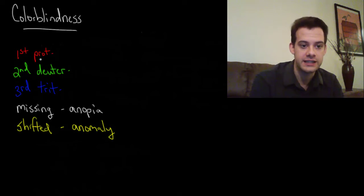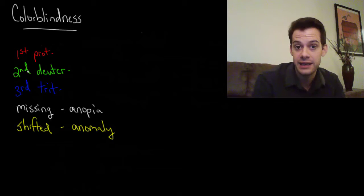The first in this case is red, so this is going to use the Greek for first, pro. So we have red, then we have the green, the medium cone. This uses the Greek for second, deuter. And then for the third we have tri in Greek and this is for the blue cone type or the short wavelengths.